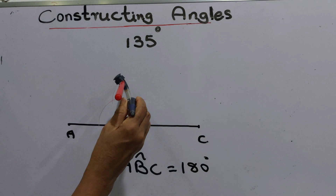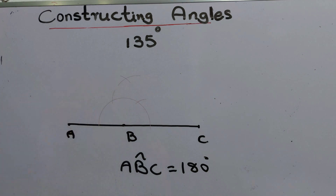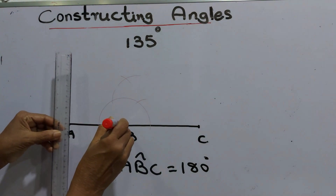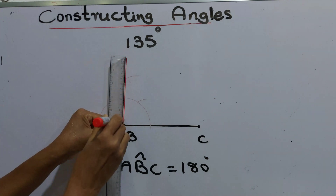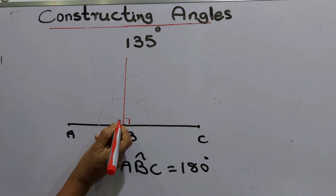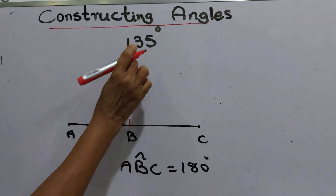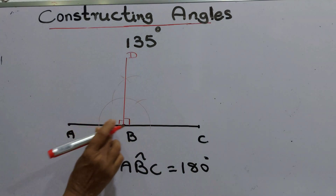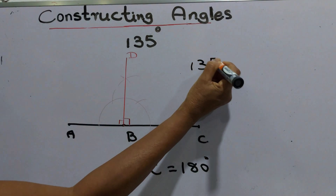Then the next step, we are going to make an angle of 90 degrees. Keep the compass point here, draw another arc, and here another arc. We did this in an earlier lesson. Join point B to this point — that is 90 degrees. We'll name this as D. DBC angle is 90 degrees, and DBA angle is also 90 degrees.